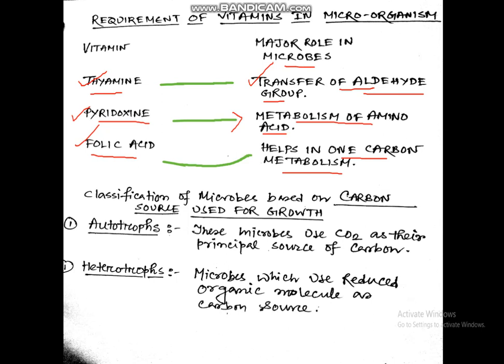Classification of microbes based on carbon source used for their growth — this is very important for the exam. Autotrophs use carbon dioxide (CO₂) as their principal source of carbon. Heterotrophs use reduced organic molecules as their carbon source.